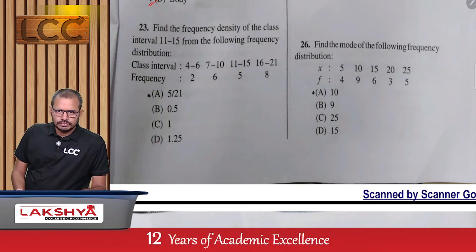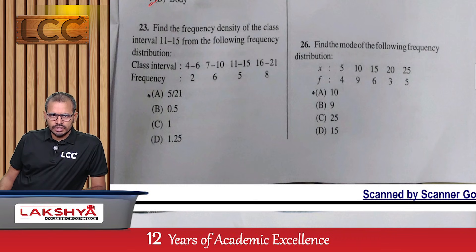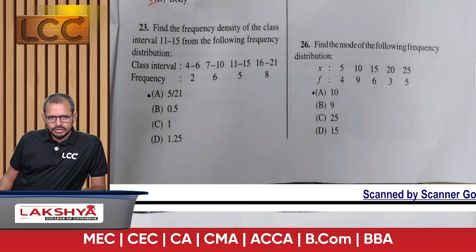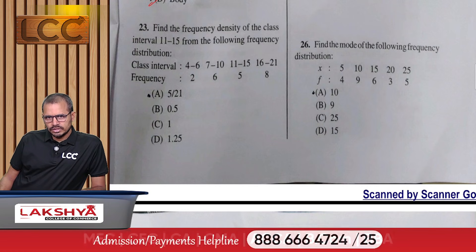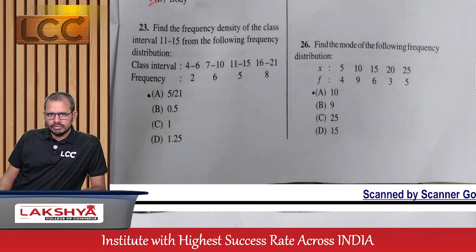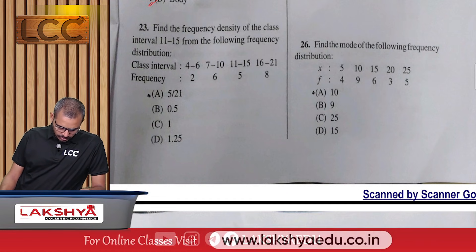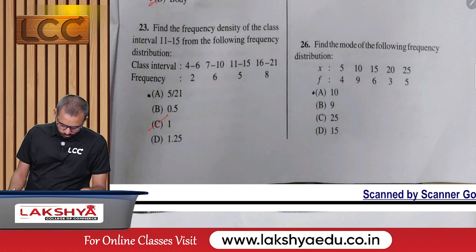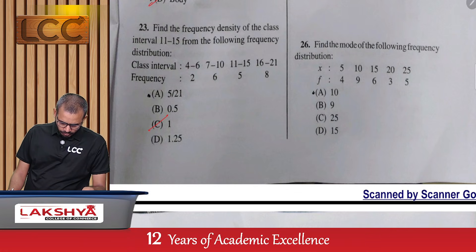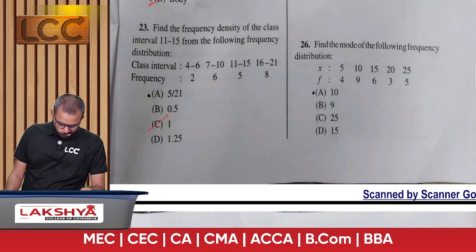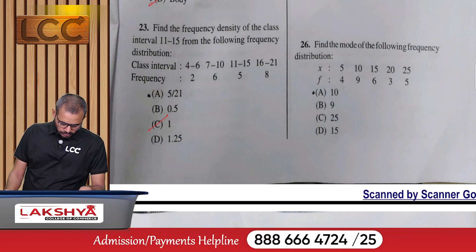Question 23: Find the frequency density of the class interval 11–15 from the frequency distribution with class intervals 4–6, 7–10, 11–15, 16–21 and corresponding frequencies 2, 6, 5, 8 — option C.